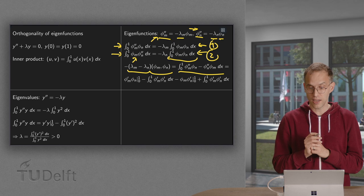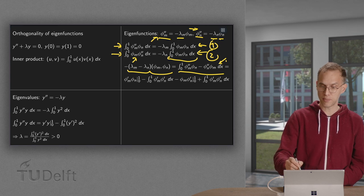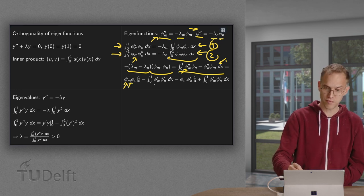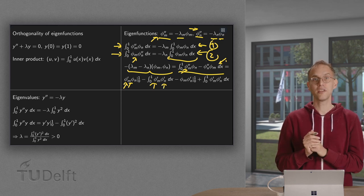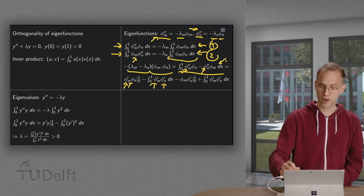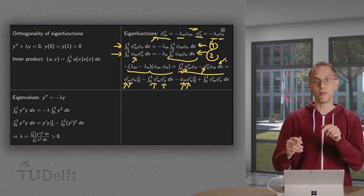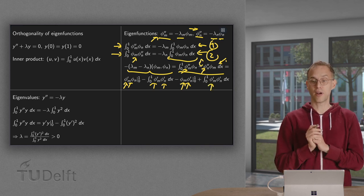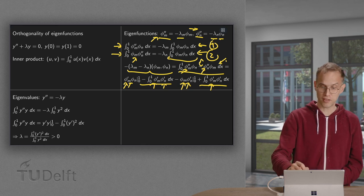We now show that the left hand side equals zero using integration by parts on both terms. Integrating phi m double prime gives phi m prime times phi n evaluated between zero and one, minus the integral of phi m prime times phi n prime. Similarly, integrating phi n double prime gives phi n prime times phi m between the boundaries, plus the integral of phi n prime squared. The two remaining integrals exactly cancel out, leaving only the boundary terms.